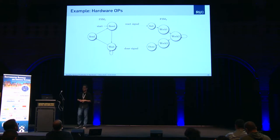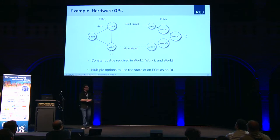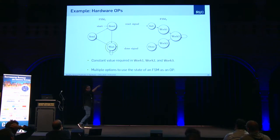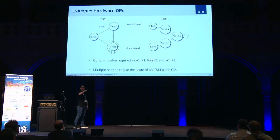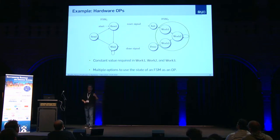We use an existing signal which has a constant value whenever we need it, but switches uncontrolled otherwise. So how do we do this? Let's look at this example. We have two FSMs — finite state machines — and the first state machine starts the second one and waits until it is done. Now assume we need some constant value in the states work1, work2, and work3. We have multiple possibilities to instantiate an opaque predicate from our state machines. For example, this wait state is maintained throughout the whole operation of this finite state machine. So while we are in work1, work2, or work3, the register encoding this state is constant. We can use this encoding of this state to generate our constant value.